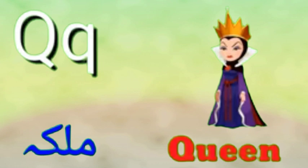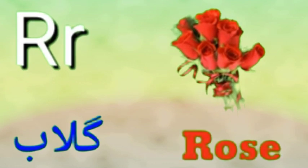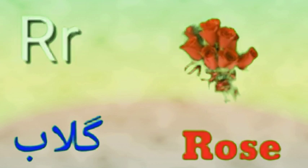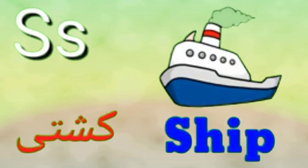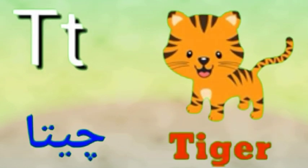Q is for Coin, Coin means Malka. R is for Rose, Rose means Gulab. S is for Ship, Ship means Kashti.